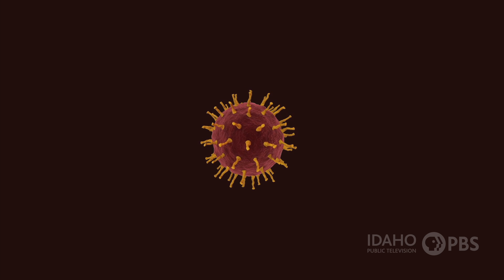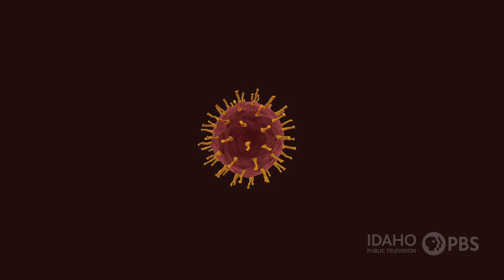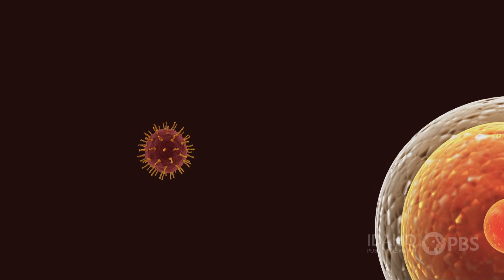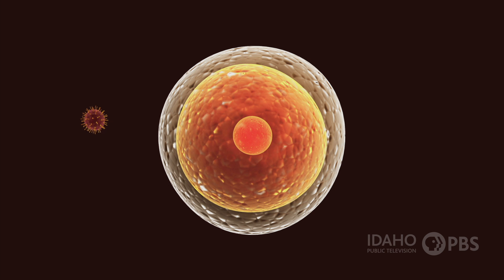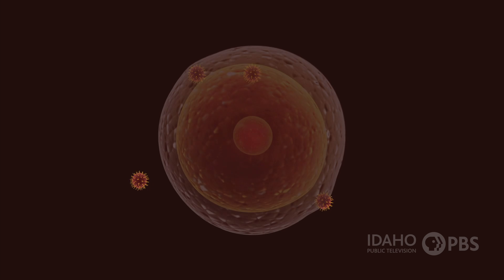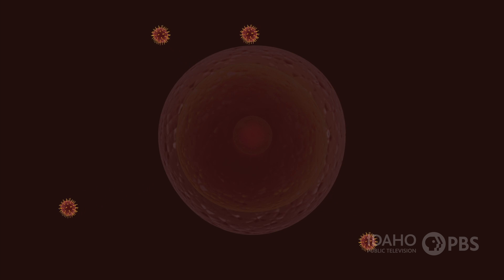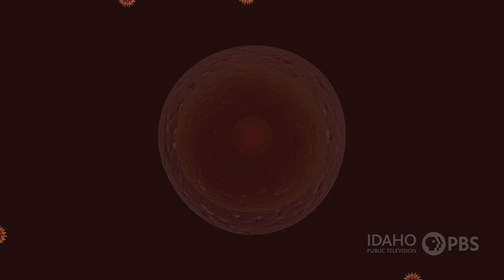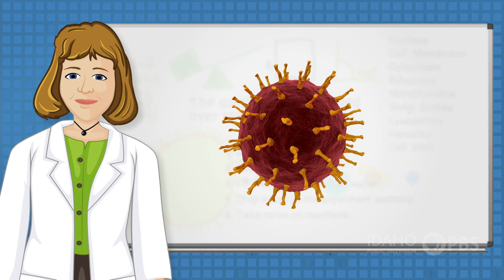Once inside the host body, a virus uses those special spikes on its outer shell to attach itself to the receptors on a cell wall. It then attacks the cell, burrowing inside, and uses that cell to make copies of itself. The original host cell generally dies, and the multiplying virus seeks out new cells to attack — and that can make you sick.